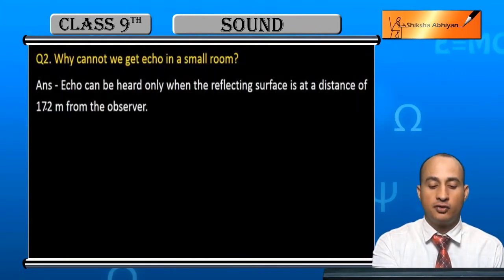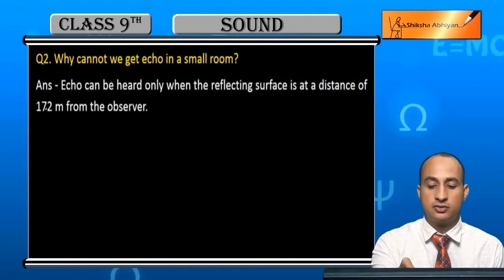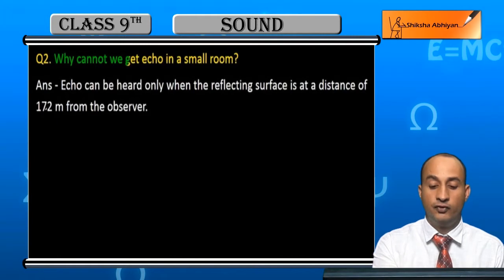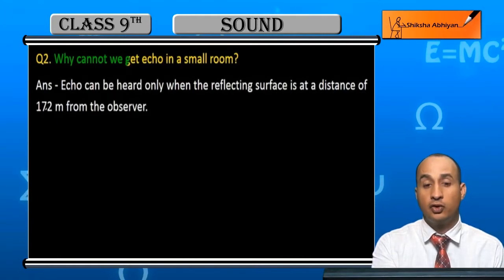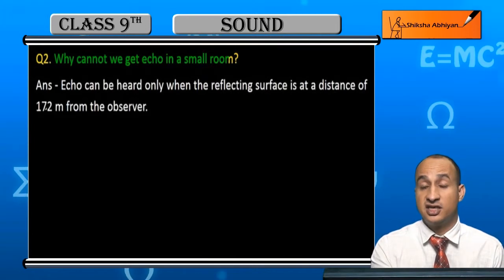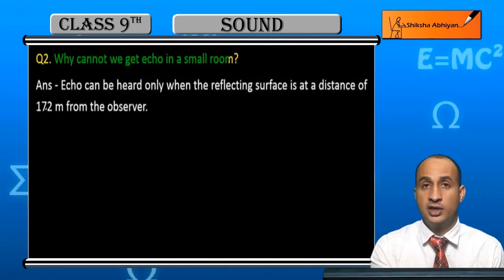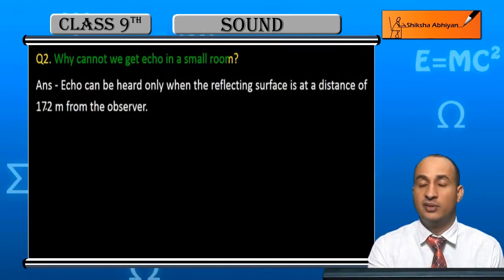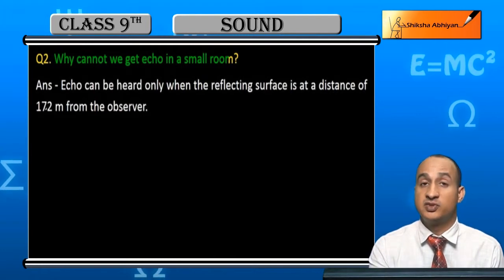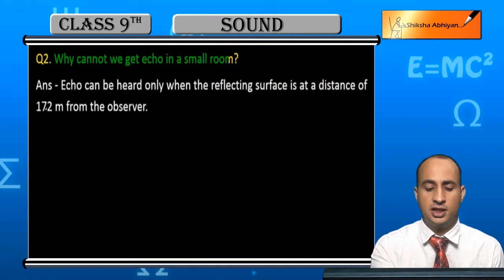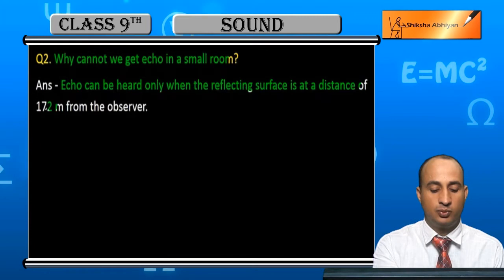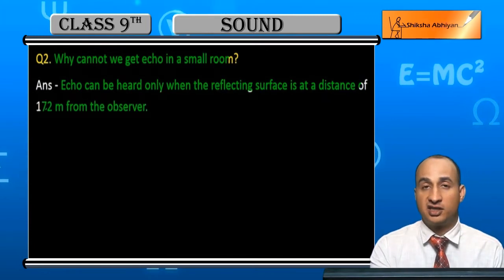Question 2 is: why cannot we get an echo in a small room? Since we know the minimum distance for an echo is 17.2 meters, echo cannot be heard when reflecting sound at a distance less than 17.2 meters from the reflective surface.